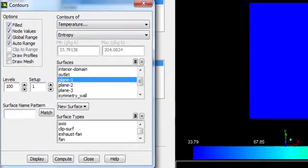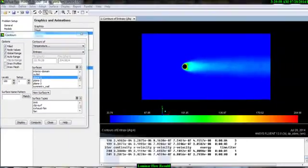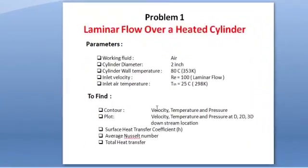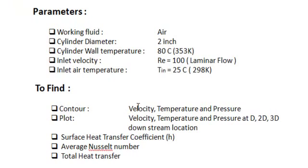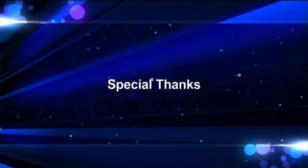This is how we answer the first question — the velocity, temperature, and pressure contours. In the next tutorial, we will see how to plot velocity, temperature, and pressure at different downstream locations. Thank you.